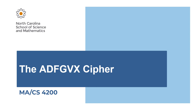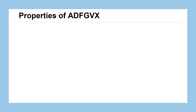In this lesson, we're going to be looking at a new cipher, the ADFGVX cipher, which is not a block cipher, but does exhibit some of the same criteria that we know will make a block cipher secure. So let's take a look at some of the properties it does have.